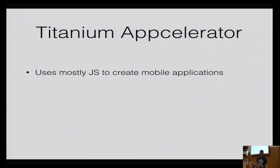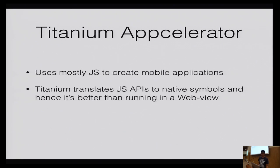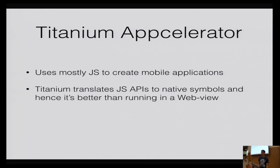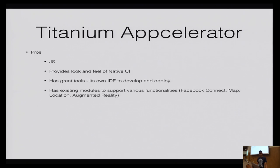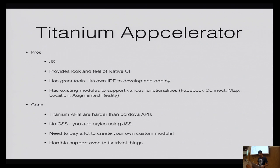Titanium has JavaScript APIs that translate directly to native symbols — Objective-C or Java — so it's better than running in a WebView. They have modules for additional functionality similar to PhoneGap plugins, and great toolsets with an IDE that connects with Xcode or Eclipse and can deploy directly to your device. However, Titanium APIs are harder than Cordova APIs if you're not familiar. The learning curve is real even with HTML5 and JavaScript knowledge — you still need to know the specific APIs of the tools you're going to use.